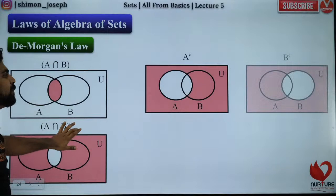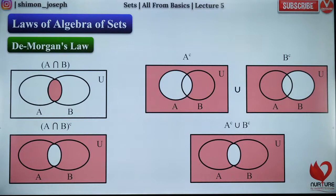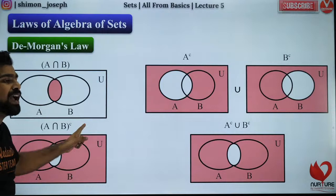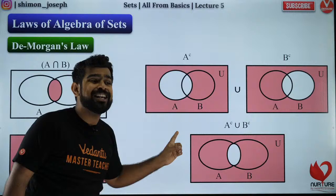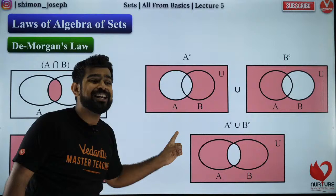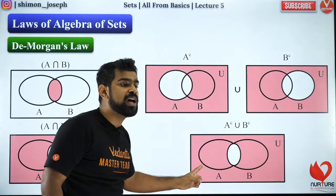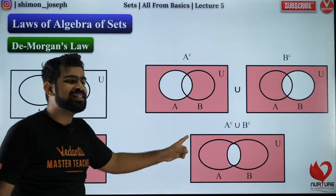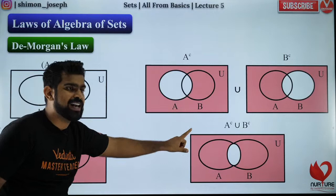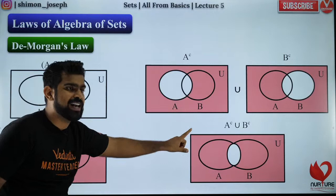Let me show you the animation for the second De Morgan's Law. A∩B whole complement — I take A complement (everything outside A) and B complement (everything outside B). A'∪B' gives the entire shaded region which is completely the same as (A∩B)'. So these two expressions are equivalent. Now you will not be scared of De Morgan's uncle!